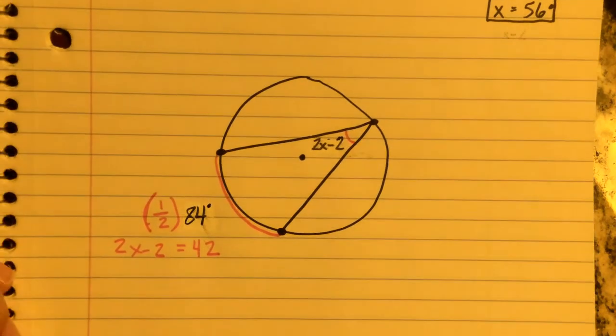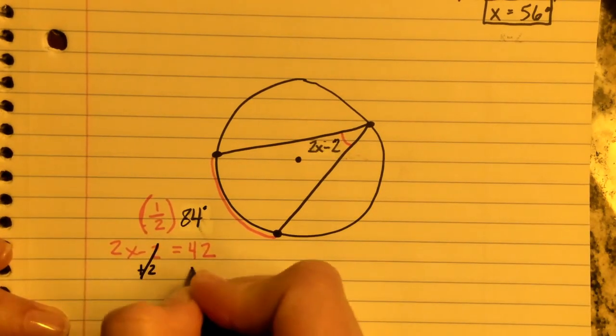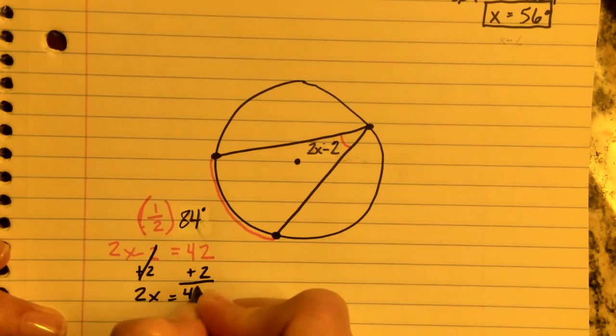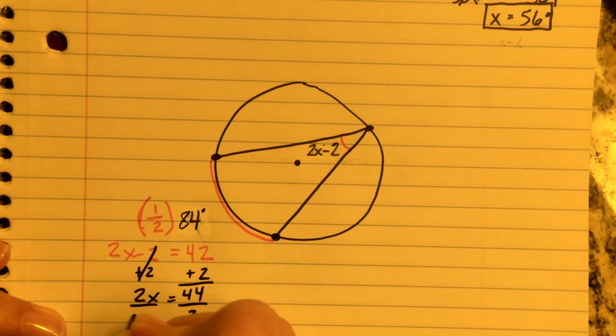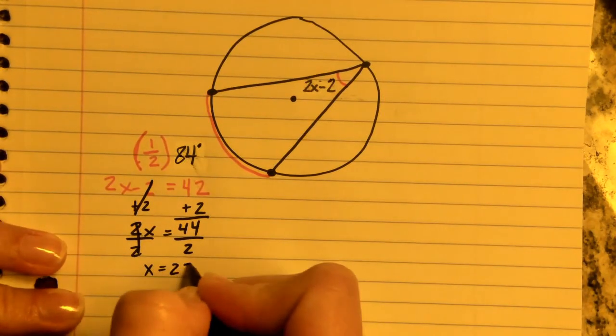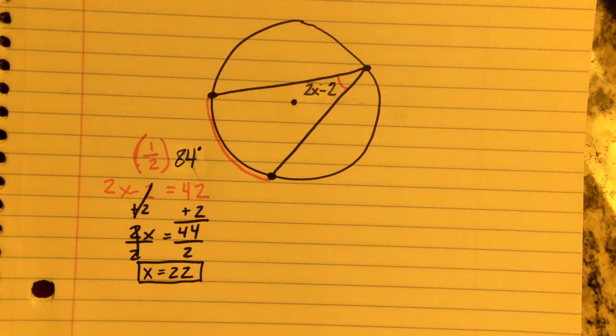Then we solve for X. We add 2 to both sides. We get 2X equals 44. Do our last step, and we find that X equals 22. I hope that helps you with a couple of the problems on the checkpoints.